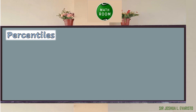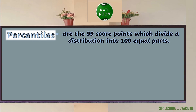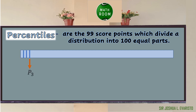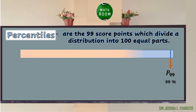After deciles, we have the percentiles. Percentiles are the 99 score points which divide a distribution into 100 equal parts, so that each part represents the data set. It is used to characterize values according to the percentage below them. For example, the first percentile P sub 1 is 1% of the distribution, P sub 2 is 2%, P sub 3 is below 3%, and so on until P sub 99, which is 99% of the distribution.